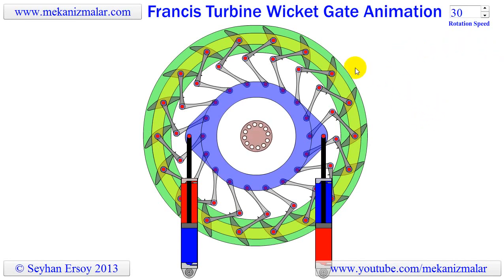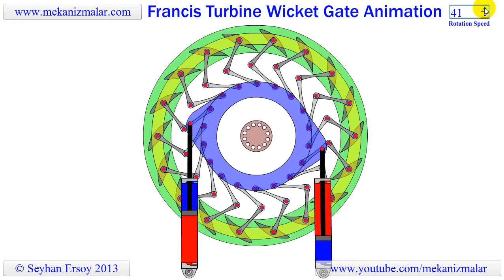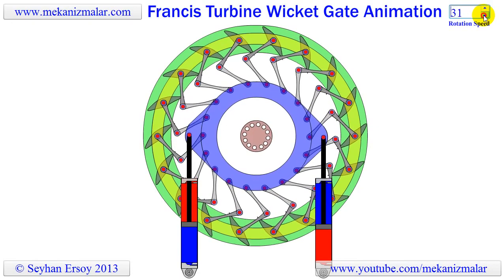Water turbines are, in principle, very simple and efficient devices. But I always find pitch control of the Kaplan turbine blades, the spear rod control of the Pelton, and the wicket gate control of the Francis turbine very interesting. In this video, I am going to describe the working principle of the wicket gate linkage system.